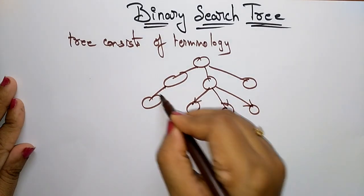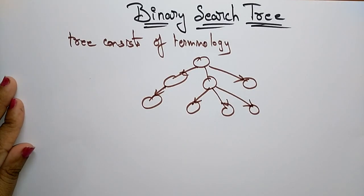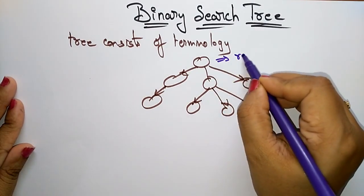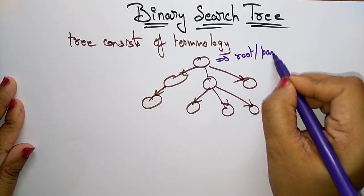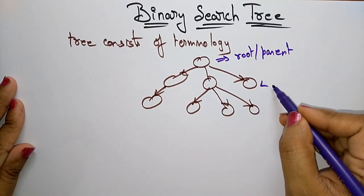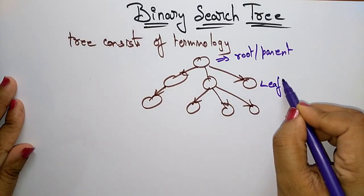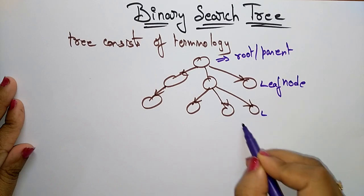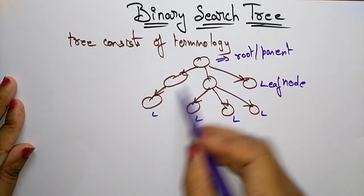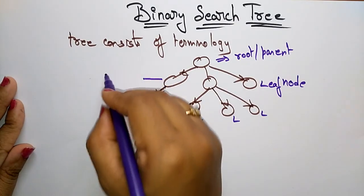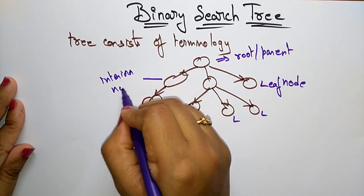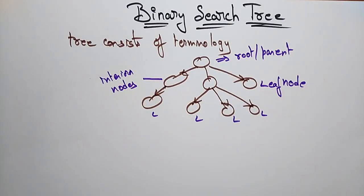This is a binary tree. This node you call it as a root or a parent — we already know that. And the last node, that we call it as a leaf node — so these are the leaf nodes. In between the root node and the leaf nodes we have the internal nodes, these are the interior nodes. So these are the different terminologies that we use in trees.